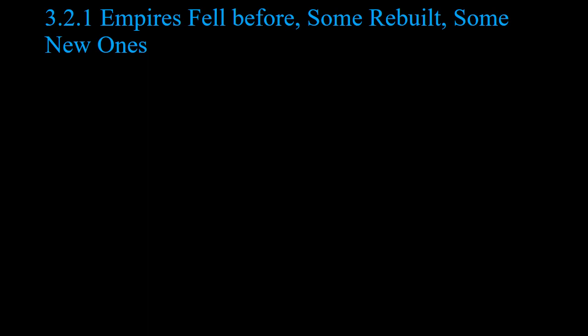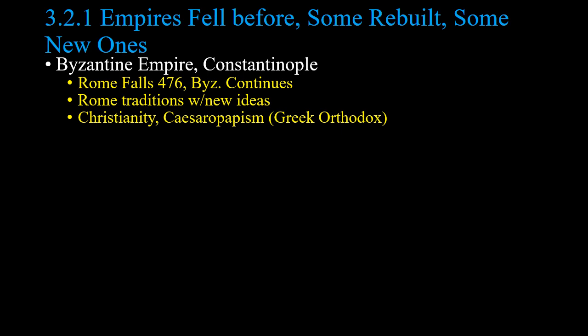Subunit 3.2: empires fell before, some rebuilt, there are some new ones. Let's look at some rebuildings and continuations. The Byzantine Empire, instead of centered out of Rome, is centered out of Constantinople — though that happened before Rome even fell. It has Roman traditions but with new ideas: roads, Christianity in the form of Greek Orthodox, later Eastern Orthodox, with the ideas of Caesaropapism — that the Caesar is more important than the papacy.